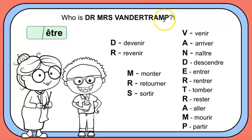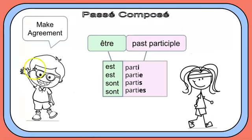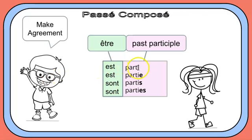Now, who is Dr. Mrs. Vander Tramp? Dr. Mrs. Vander Tramp is an acronym for a list of verbs that go with être when you're making the passé composé. When you're using être in the passé composé, you have to make agreement. If your subject is male, you use the male form of the past participle. If your subject is female, you use the female form — for example, il est parti ends with I, but elle est partie adds an E because she's feminine. And if the subject is plural, you add S, or ES for feminine plural.